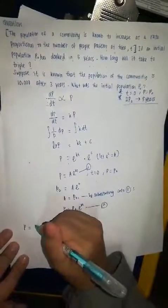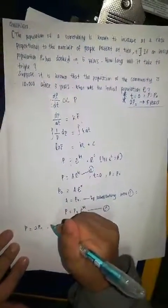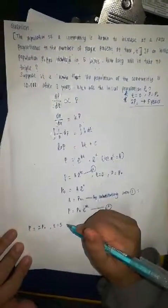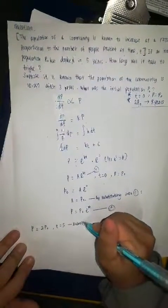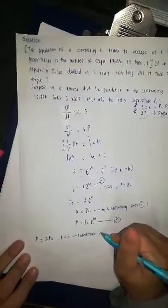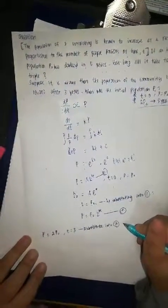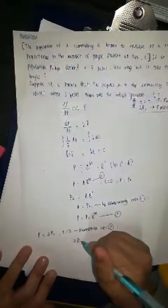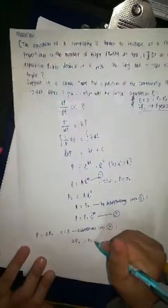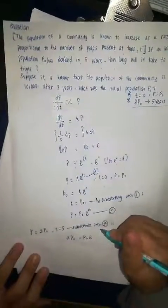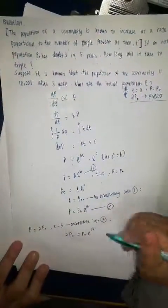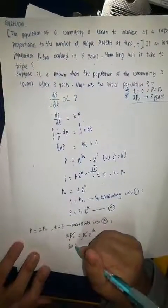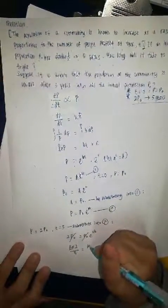So P equal to 2P₀ and then T is equal to 5 years. And then, we will get 2P₀ equal to P₀ e to the power of 5K. And then, we cancel P₀ and then we get ln 2 over 5 equal to K.